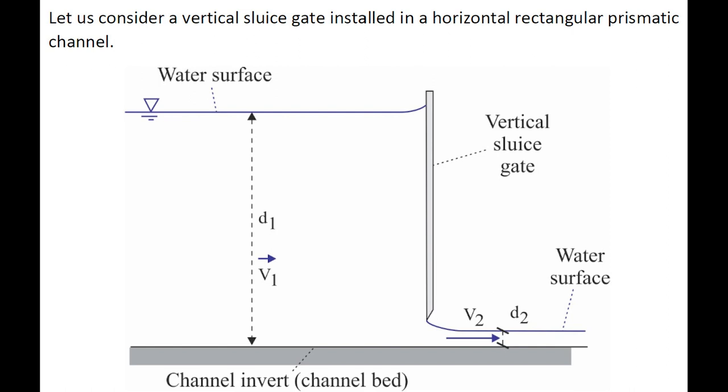Let us consider a simple application, a vertical sluice gate installed in a horizontal rectangular prismatic channel, partially opened, as sketched here.